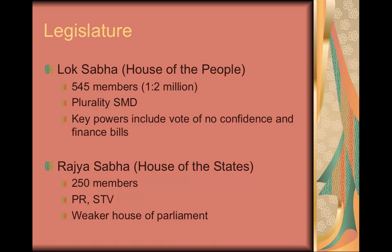This is the place where the government answers to — they can grill the government. The Lok Sabha is the only body that can call a vote of no confidence in the government. They come to power through plurality SMD seats elections, but there are certain seats reserved for a class known as the Untouchables from the caste system, as well as two for the Anglo-Indian community. So they do have special reserved seats that give a PR-like function for at least a couple of groups within India. The Lower House has similar powers to the Upper House in many ways, except that they're stronger with respect to finance bills.